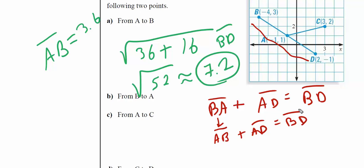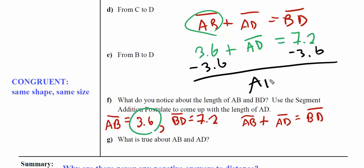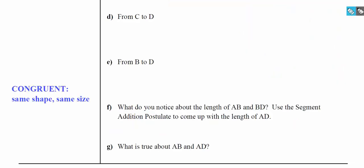This is part F - I just set up the segment addition postulate for line segment BD. Looking at this segment addition postulate, we know AB is 3.6 and BD is 7.2. We can solve for AD. Subtract 3.6 from both sides and we get that AD is 3.6. Wow! So if AB is 3.6 and AD is 3.6, then they're both the same - same shape, same length, same size.